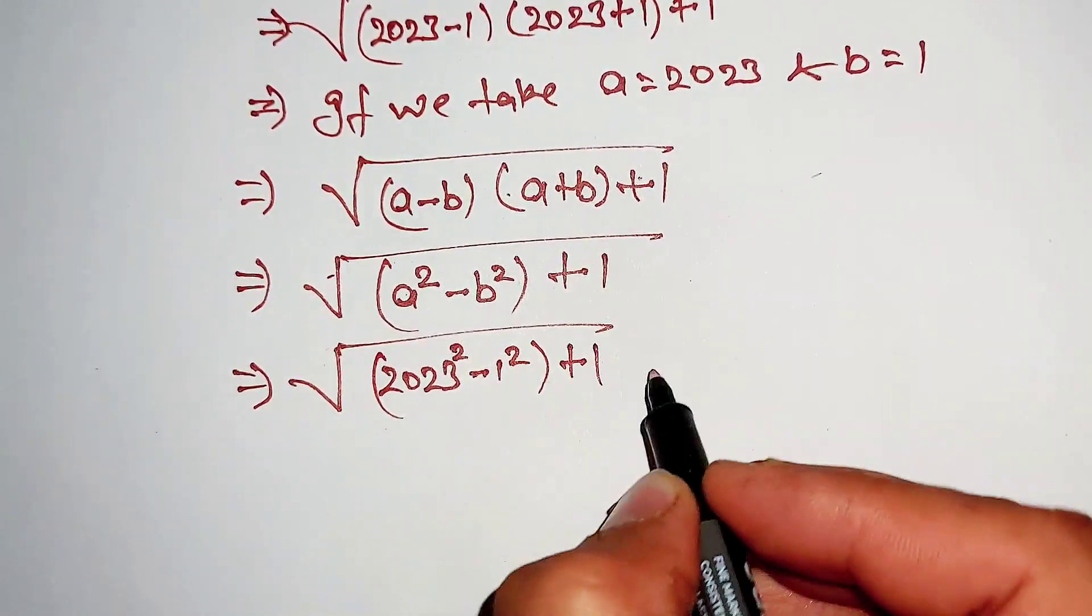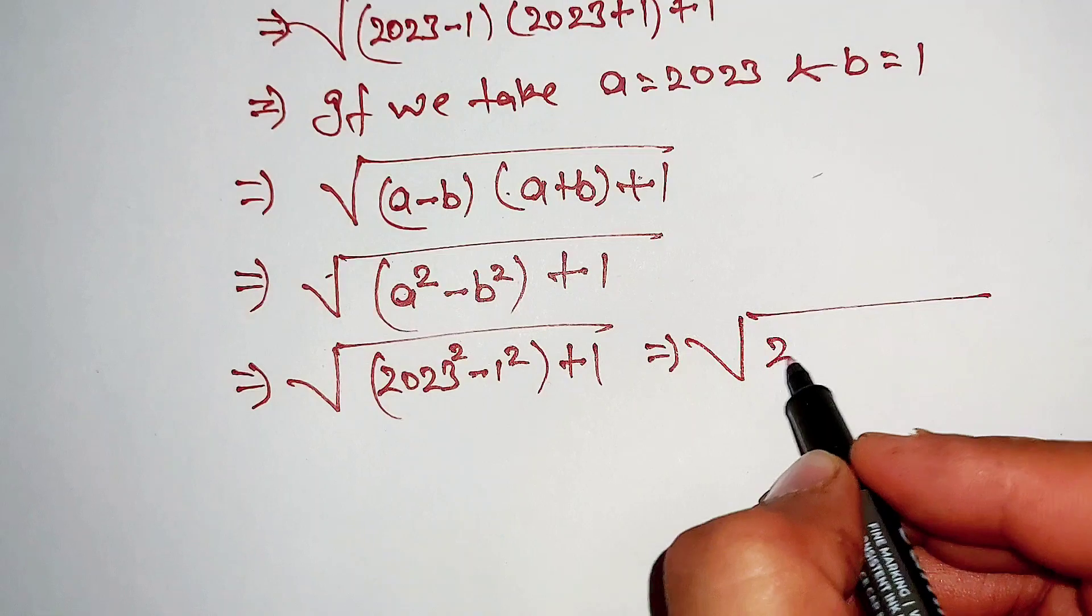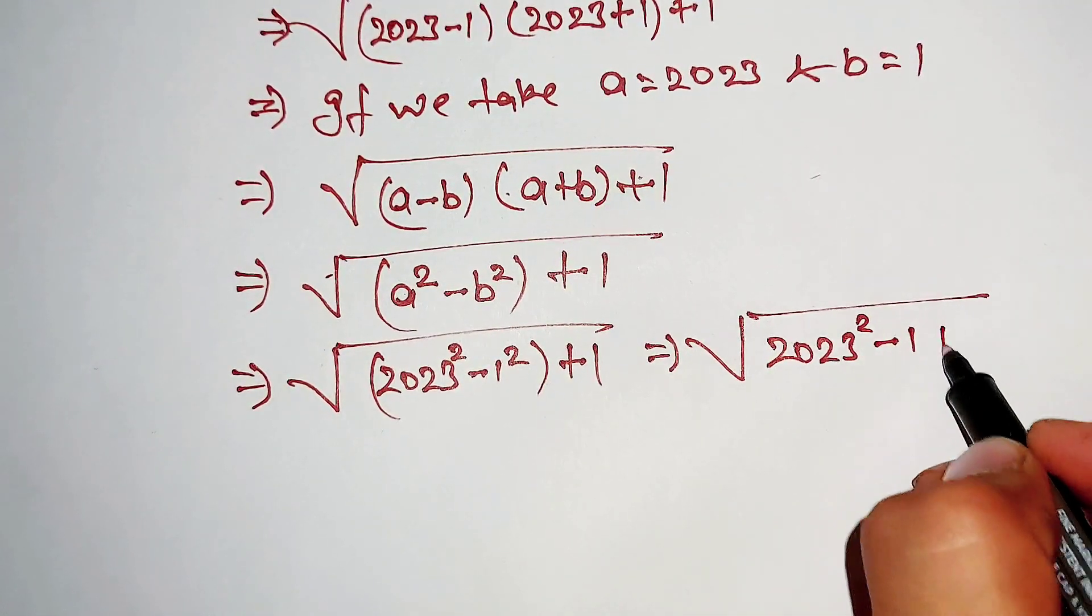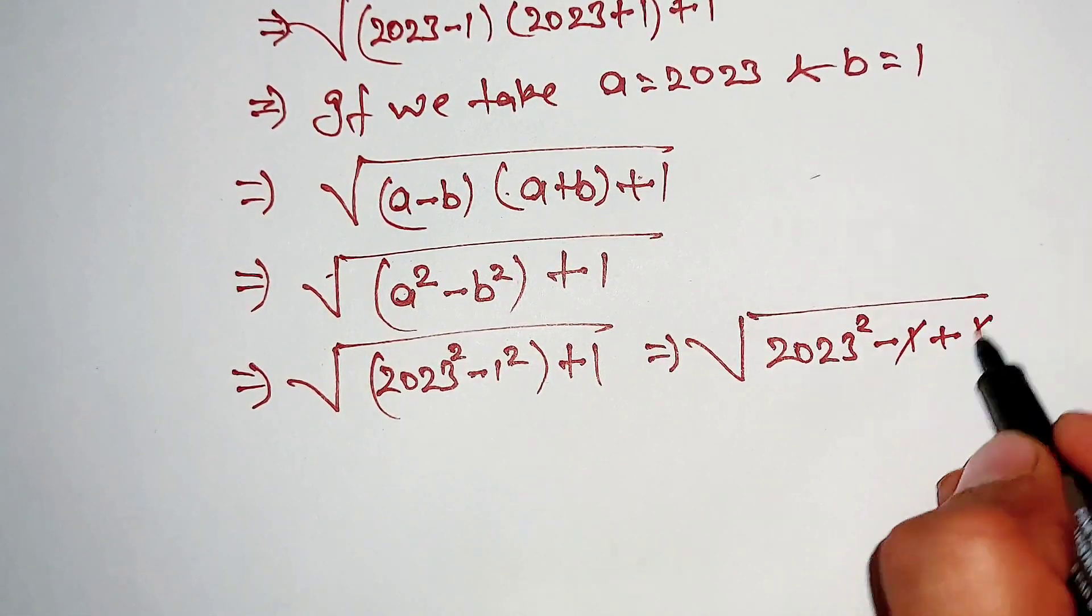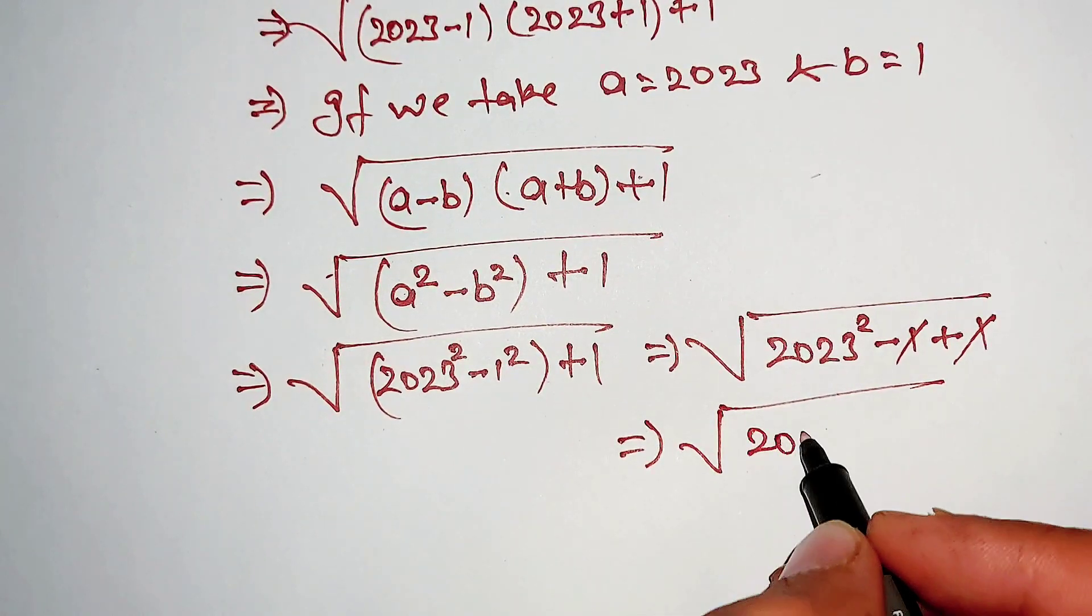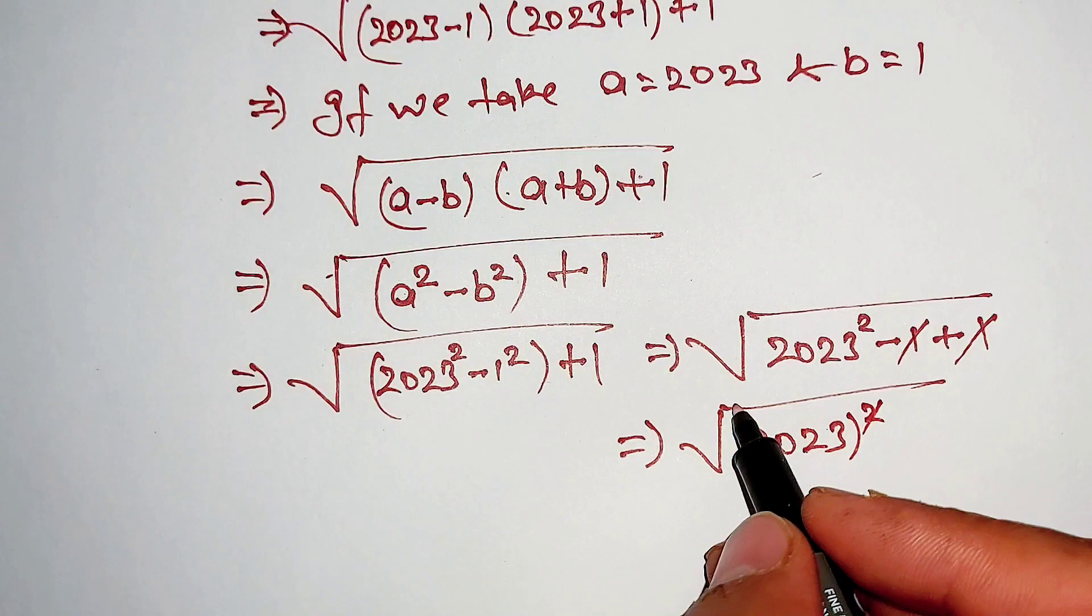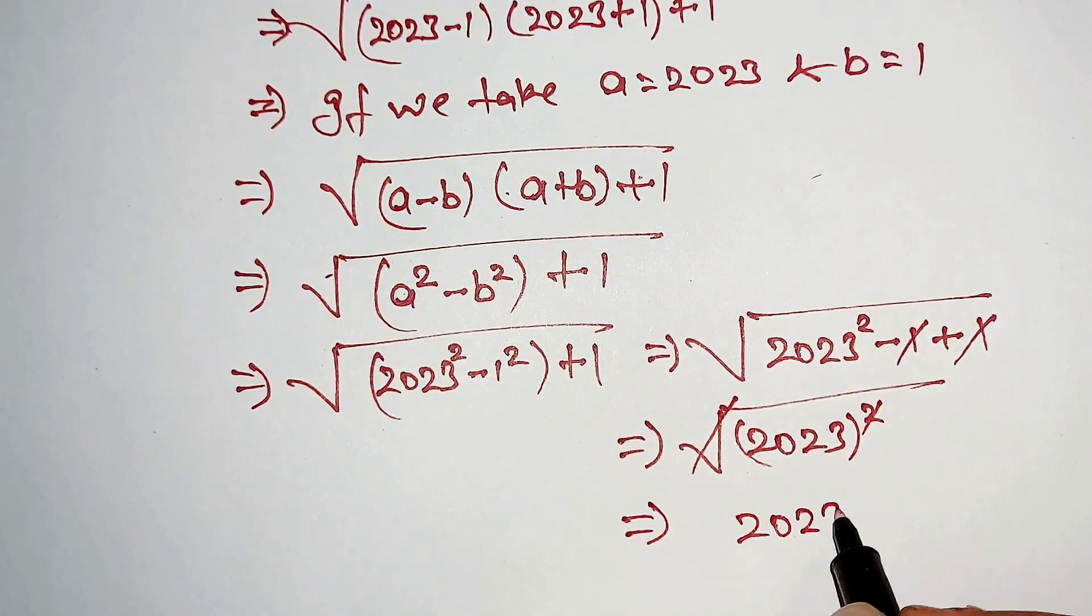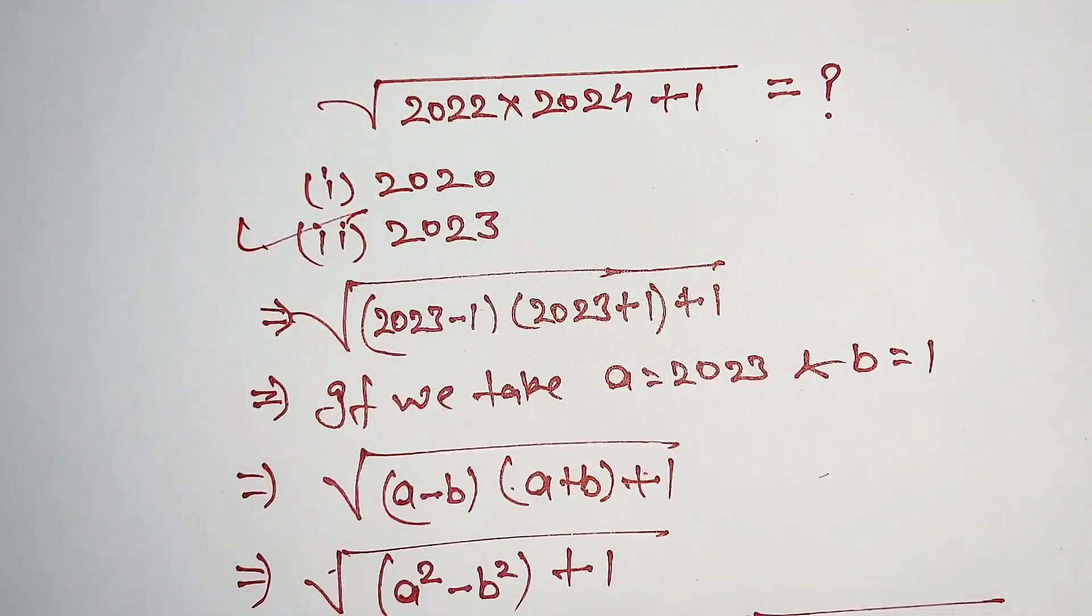And plus 1. If we further solve this, 2023 square minus 1 plus 1, this one is canceled out. This negative 1 and 2023 square, this square will cancel out this square root and we get the value 2023, and option 2 is right.